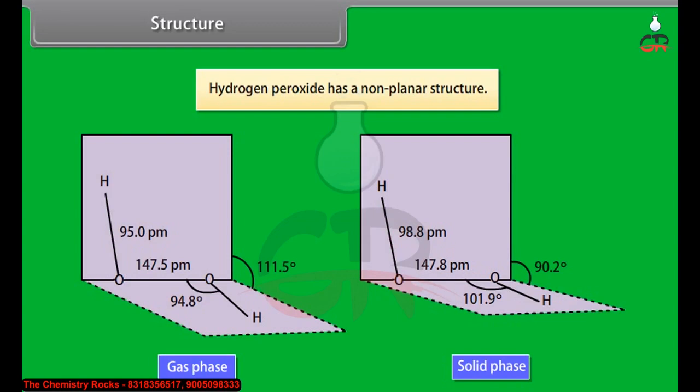Structure: hydrogen peroxide has a non-planar structure. In gas phase, the dihedral angle is 111.5 degrees. In solid phase at 110 Kelvin, the dihedral angle is 90.2 degrees.